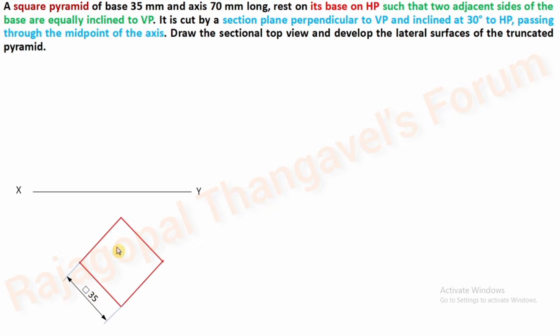Now give notations on each and every corner. Extend the perimeter — we know that we have to connect slant edges OA, OB, OC, and OD. Before the completion of the section plane, always start your construction in thin lines.